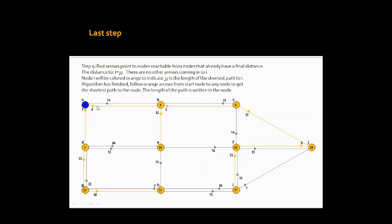Following the orange arrows from A, you can trace paths through the graph. The distances recorded are: 6, then 18, then 26, then 37.